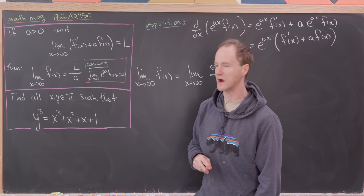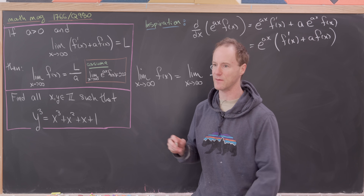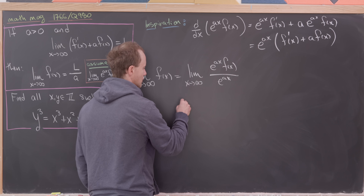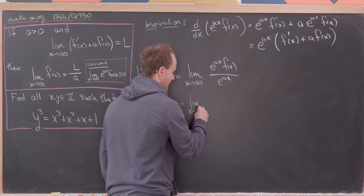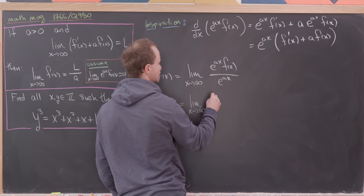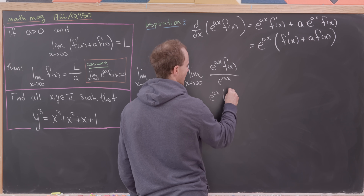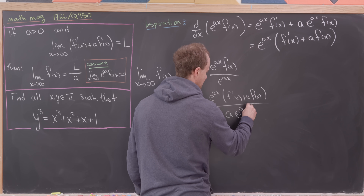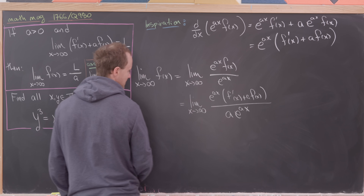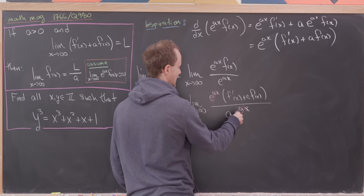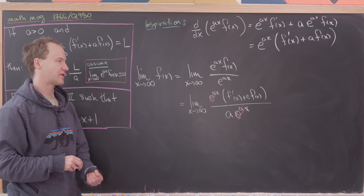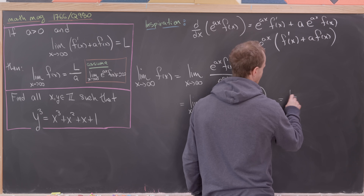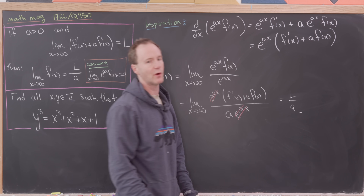We held off on writing that assumption initially so as not to give away the solution strategy. Now we apply L'Hopital's rule, taking the derivative of the numerator and denominator. The derivative of the numerator was already computed, and the derivative of the denominator is a times e^(ax). The e^(ax) factors cancel, leaving us with 1 over a times the limit we know, giving a final answer of L over a — exactly what we wanted to show.